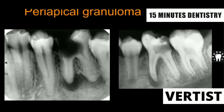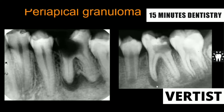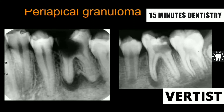Sometimes with the same periapical radiolucency, if the defense mechanism of the individual is good — as seen in younger patients — and the virulence of the organism is less, then the body will start healing that abscess with granuloma formation. This is called periapical granuloma. The radiolucency of periapical granuloma will always be lined by a radiopaque border — you can see radiopacity surrounding the radiolucency. It is well-defined, unlike the periapical abscess which has irregular borders blending with normal bone. Here you will see separation between normal bone and the affected area by a radiopaque border.